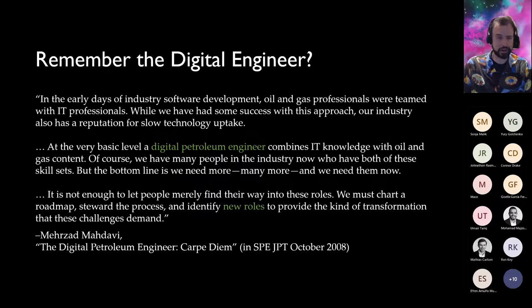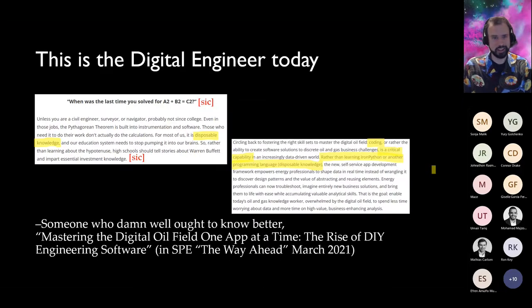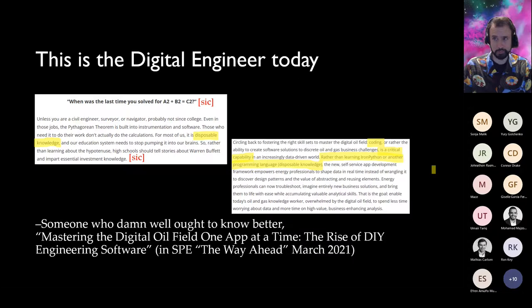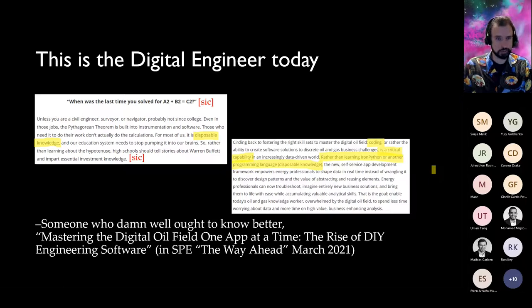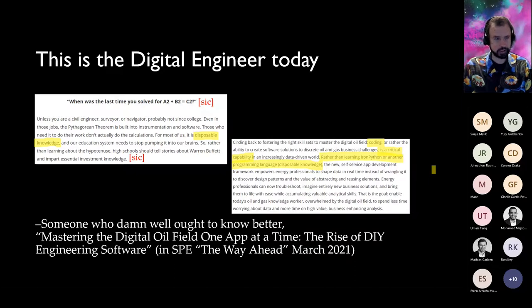So what happened to the digital engineer? This was a recent editorial published in the SPE Way Ahead — the Young Professionals magazine — in March 2021. The author asks: when was the last time you saw A squared plus B squared equals C squared? Unless you are a civil engineer, probably not since college. Even in those jobs, the Pythagorean theorem is built into software. For most of us, it is disposable knowledge, and the education system needs to stop pumping it into our brains. Rather than learning about the hypotenuse, high schools should tell stories about Warren Buffett.